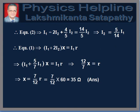Now, equation 2 implies I1 is equal to 2I2 plus I3, which is equal to 2I2 plus (4/5)I2, which is equal to (14/5)I2. This gives I2 is equal to (5/14)I1. Now, equation 1 implies (I1 plus 2I2) into X is equal to I1 into R. Putting 2I2 equal to (5/7)I1, we get (I1 plus (5/7)I1) into X is equal to I1 into R. This gives (12/7) into X is equal to R, or X is equal to (7/12)R, which is equal to (7/12) into 60, which equals 35 ohms. This is the answer to the first part of the question.